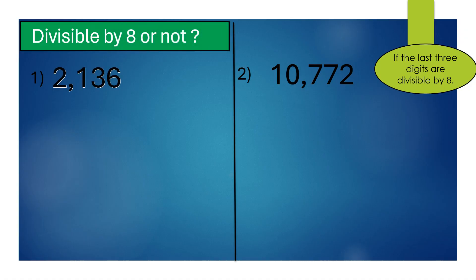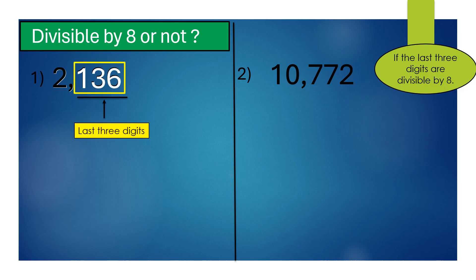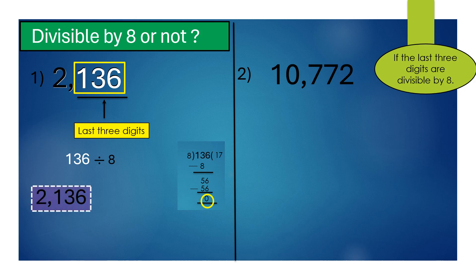For 2,136, the last 3 digits of the number are 136. As 136 is divisible by 8, therefore the given number 2,136 is also divisible by 8.